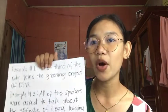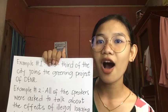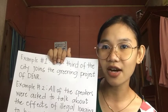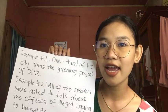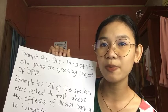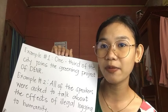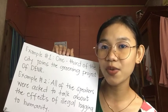Rule number ten: with a word that indicates portion — percent, fraction, part, majority, some, whole, all, none, remainder, and so forth — look at the noun in the 'of' phrase. For example, 'One-third of the city joined the greening project of DENR.' Second: 'All of the speakers were asked to talk about the effect of illegal logging to humanity.' On the first example the object of preposition is plural, so we use plural verb 'joined.' In the second, 'speakers' is plural, so we use plural verb 'were.'